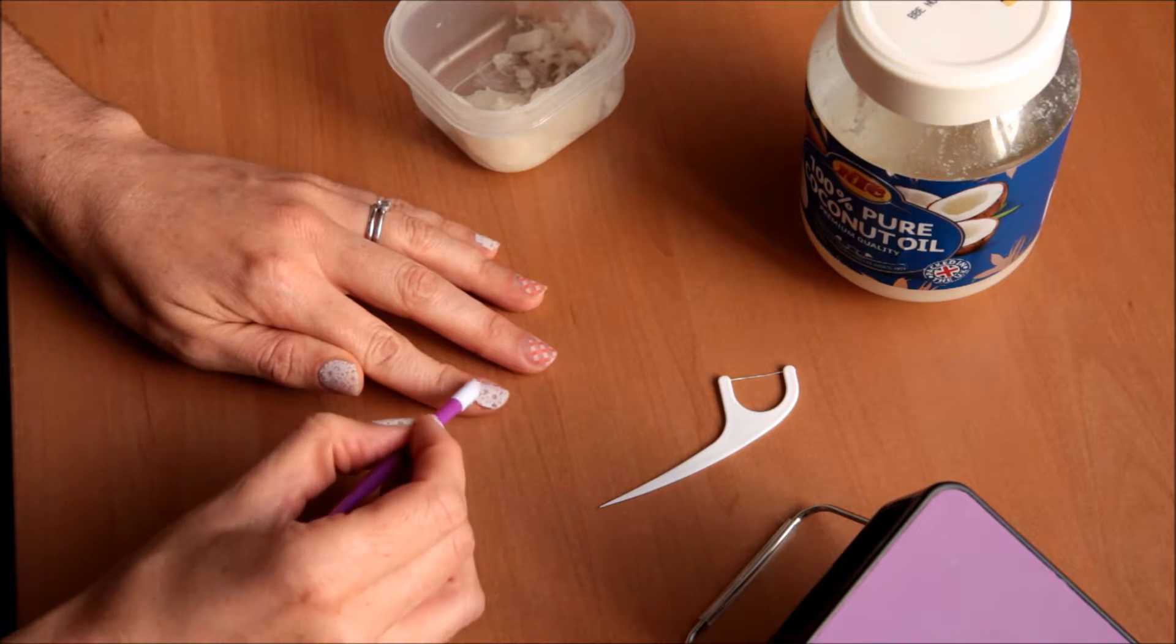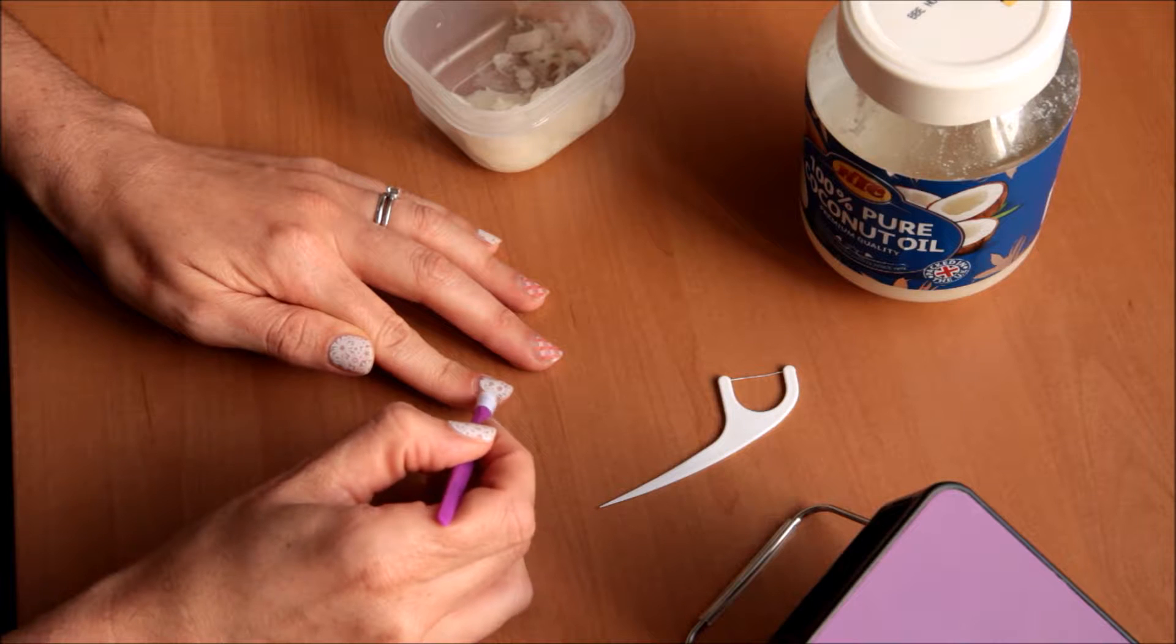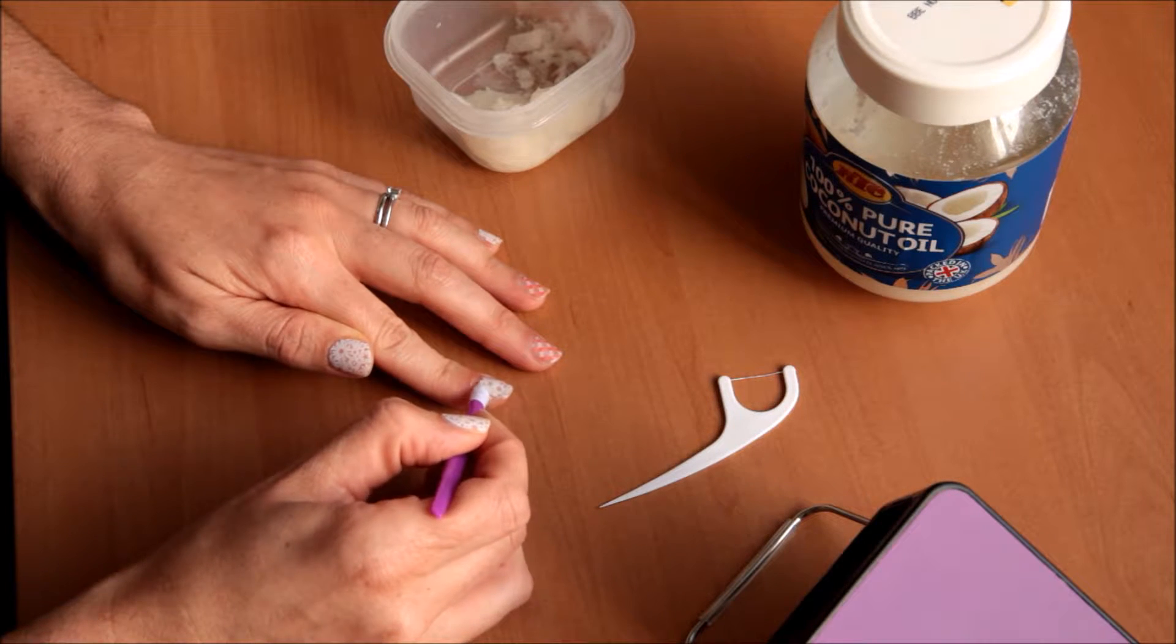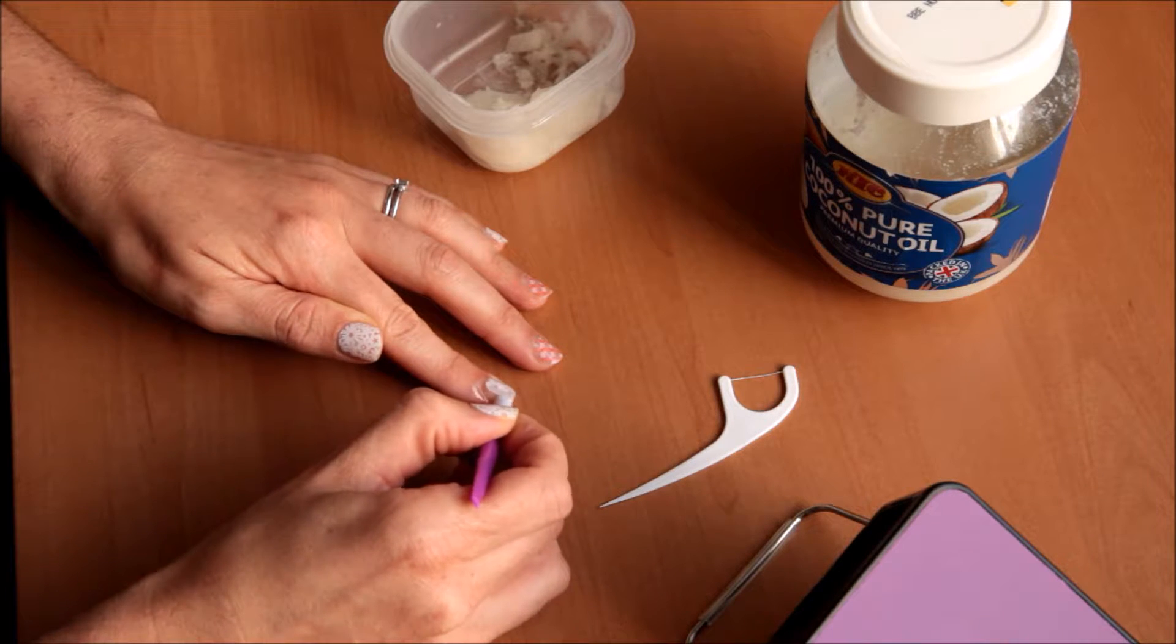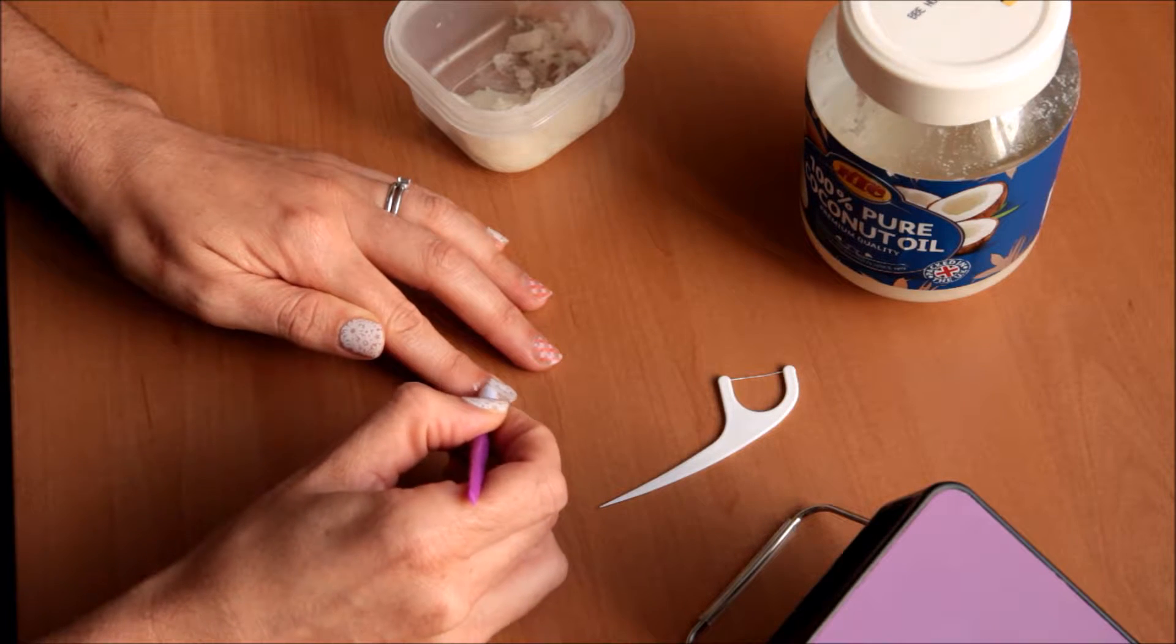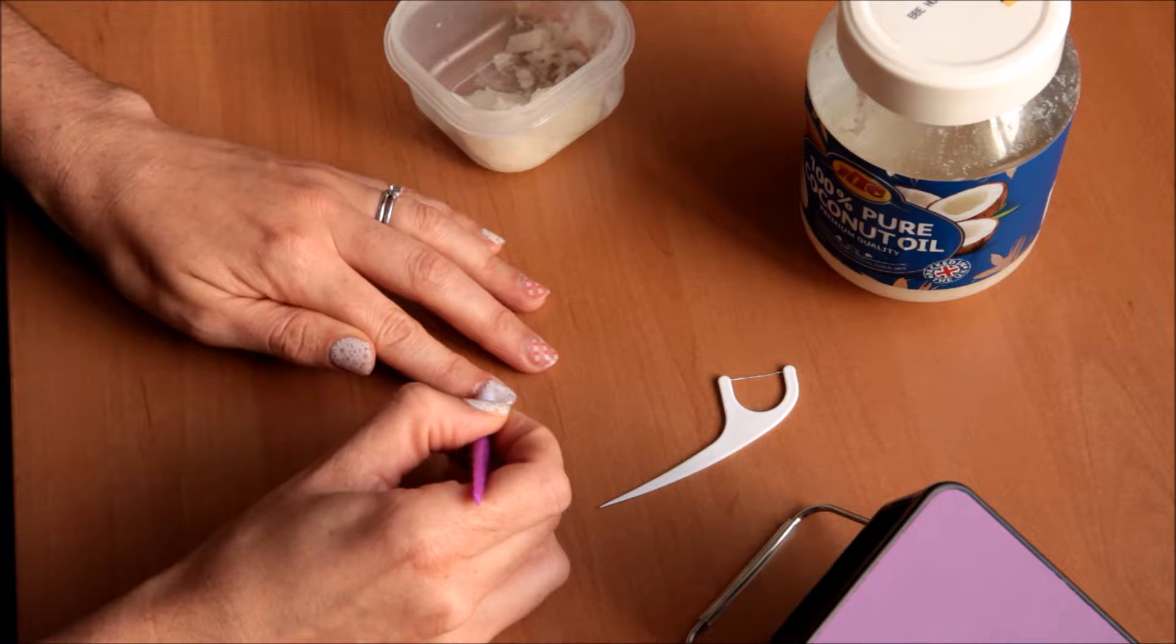And you want to go from side to side not from top to bottom. So I'm just gently pushing backwards and forwards as the wrap comes away. As you can see it is just coming away there nicely.